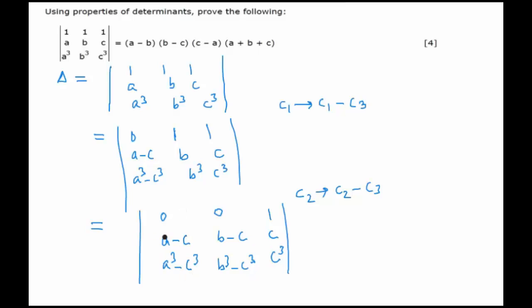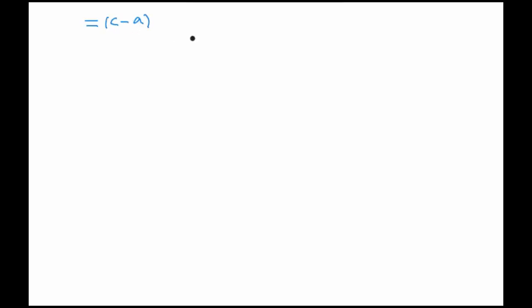In column 1, the second row has (a - c) and the third row has (a³ - c³), which factors as (a - c)(a² + c² + ac). Since we want the factor (c - a), we take out (c - a) as common from column 1. This gives us 0, -1, and (a² + ac + c²) in column 1, with the rest of the matrix unchanged.